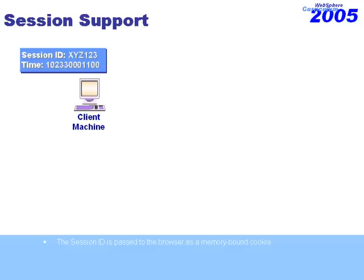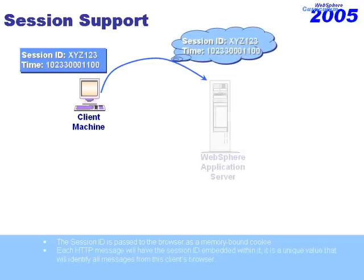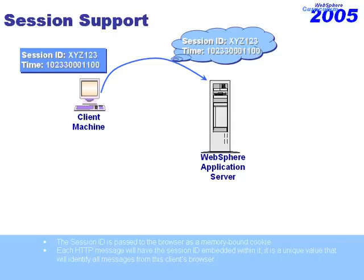This particular information is going to be stored as a dynamic cookie on the client machine inside of memory. Every time a message is going to be generated out of the client machine, we're building an HTTP message and sending that across to the application server. The session ID information is going to be embedded inside of the HTTP message itself in the header area, so that information is going to be retrieved and received by the application server.